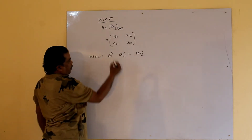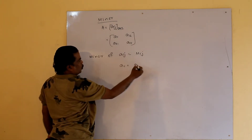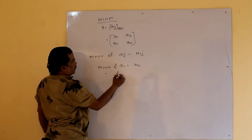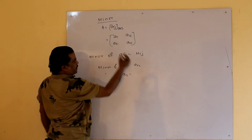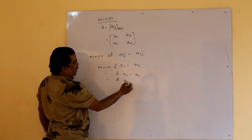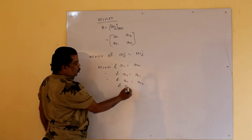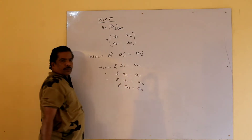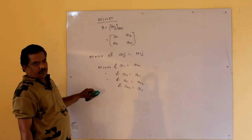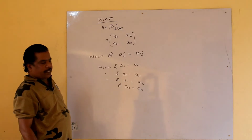So minor of A11 is equal to A22. Similarly, minor of A12 is equal to A21, and minor of A21 is equal to A11. The minor of an element of a square matrix is obtained by deleting the row and column it is present in.